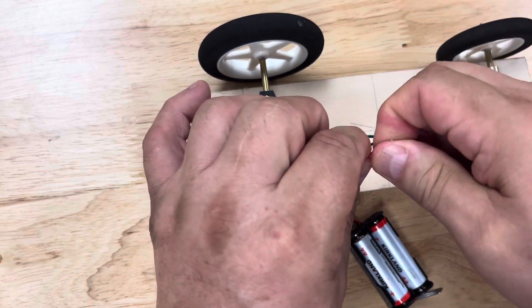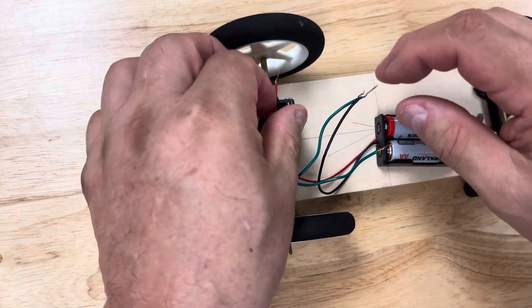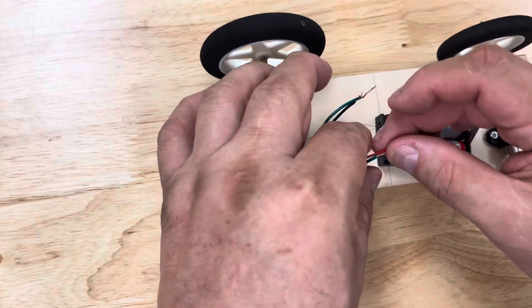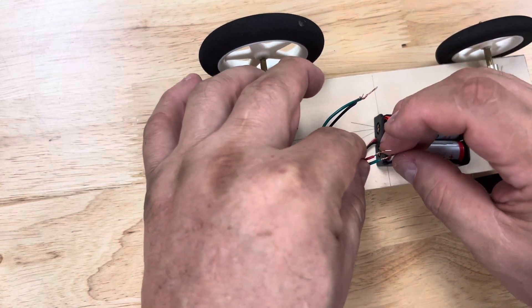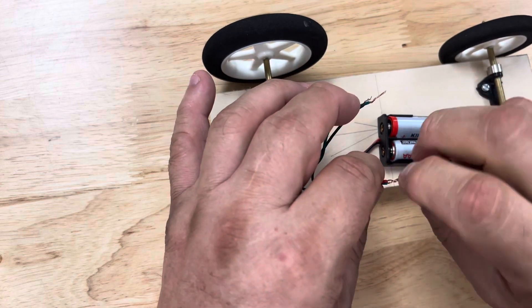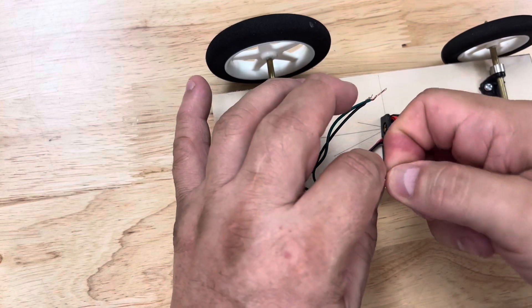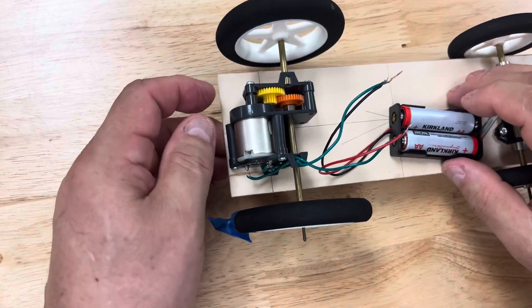And again, we're going to twist those together. Nice and tight. All right, and now, I have these flipped around. Oops, one came disconnected. That always happens. So, we'll just connect it right back up. One more time. Nice and tight. And it should go this time.